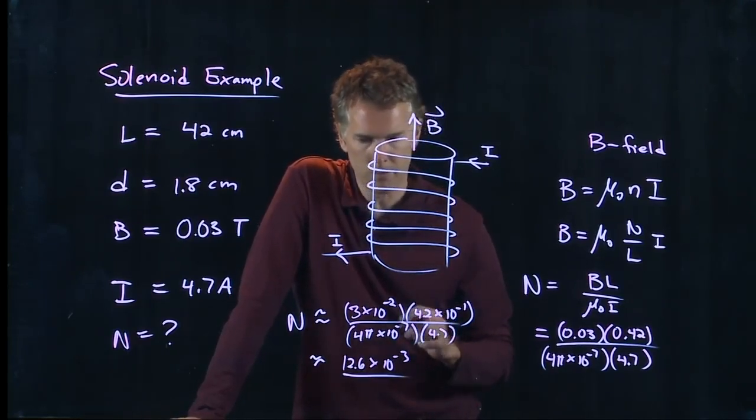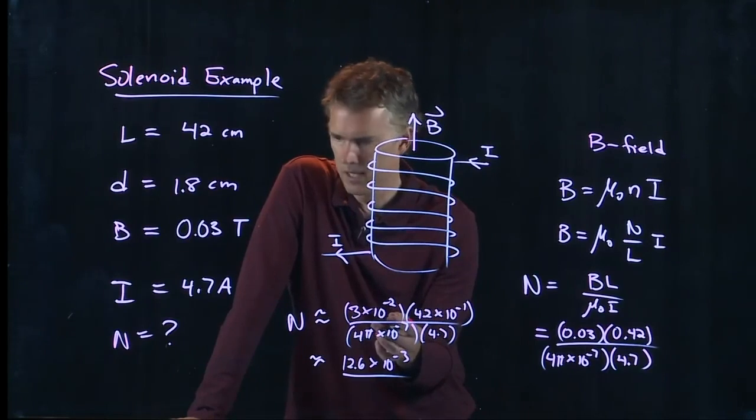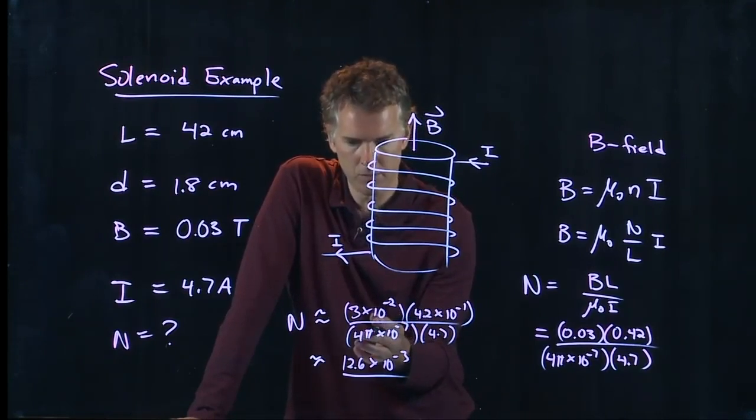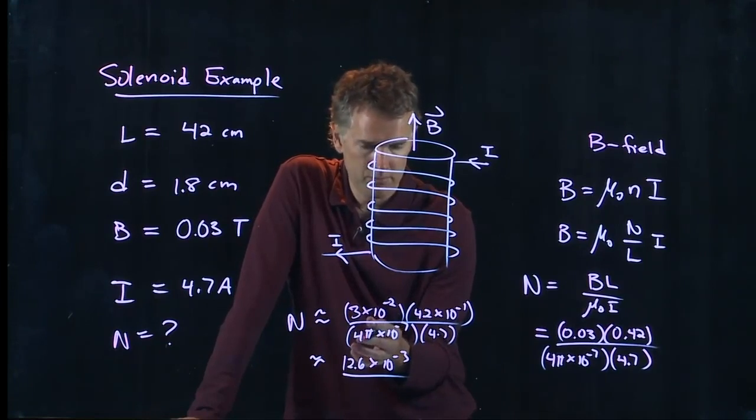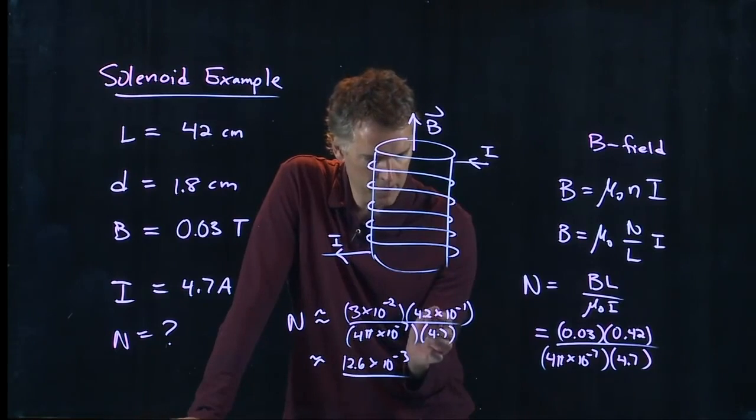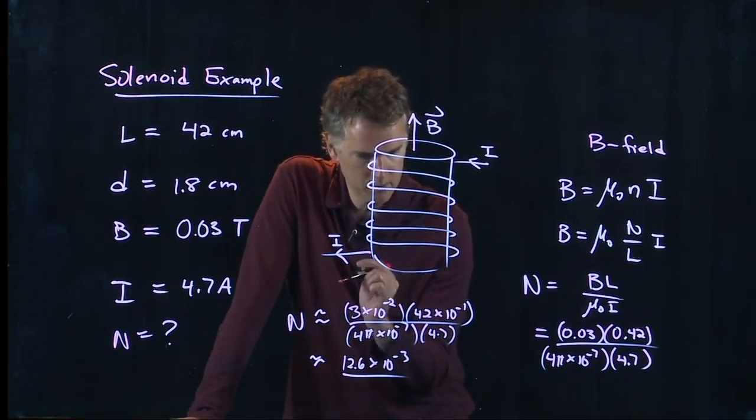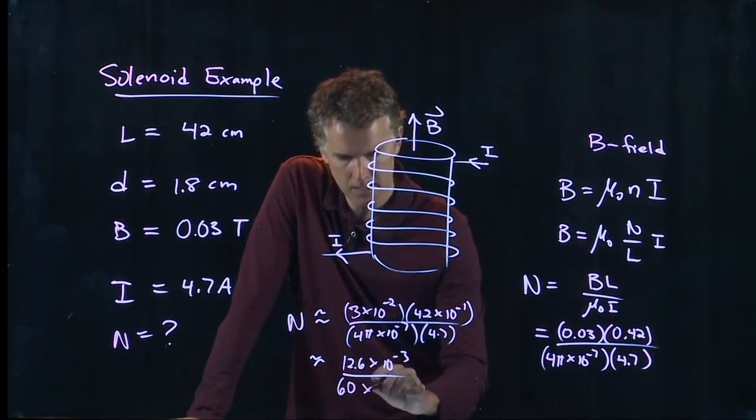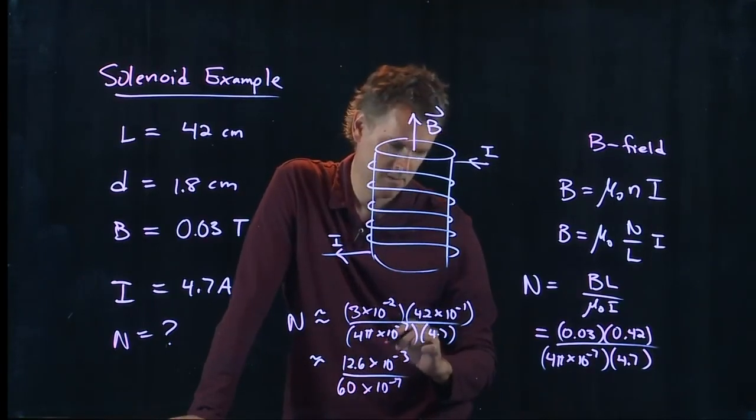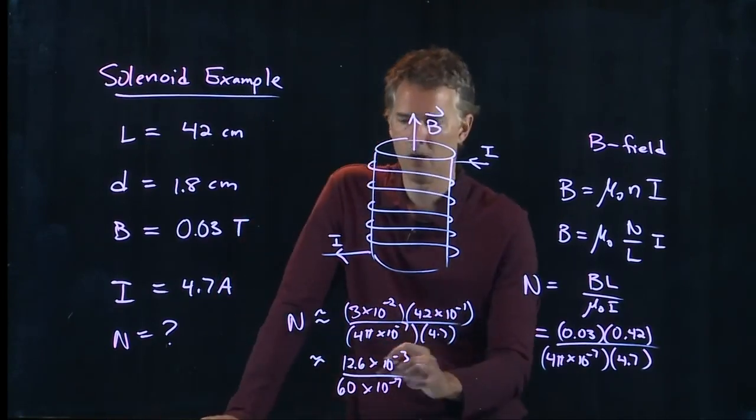What's that - 3 times 4.2 is 12.6 and then I've got a 10 to the minus 3 up in top. Down on the bottom what do we have - 4 times π that's got to be very close to 12 with a little bit more, so let's say that's 12 and we'll say that one is 5.